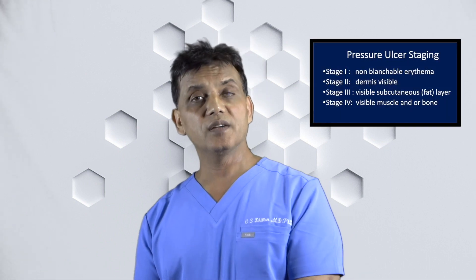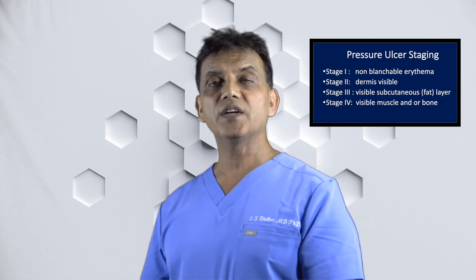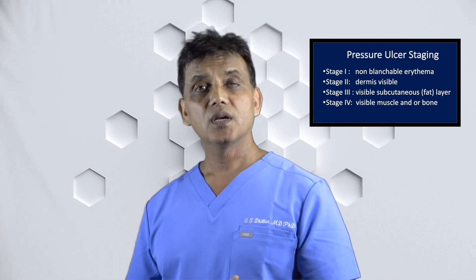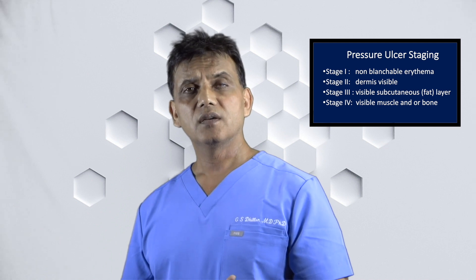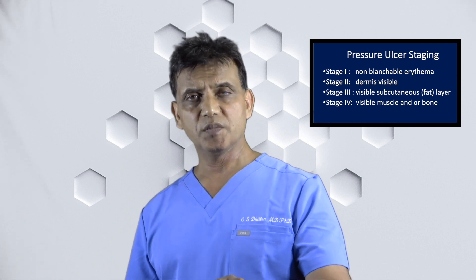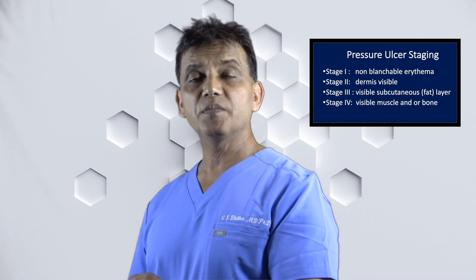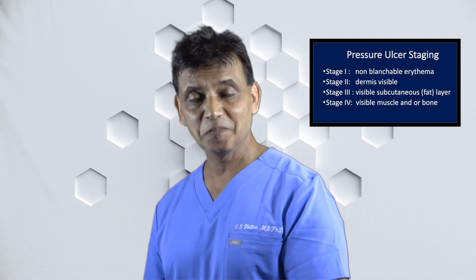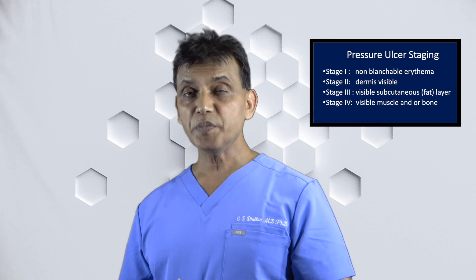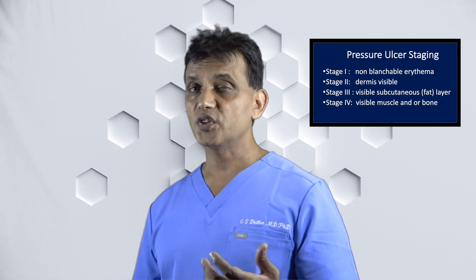Now let's look at pressure ulcer staging. Stage 1 is non-blanchable erythema of the epidermis — visually, when you look at the skin at a stage 1 pressure ulcer, you will see the epidermis, the first layer. Stage 2 is disruption of the epidermis and the dermis and exposure of the second layer, the dermis. Stage 3 is disruption of the epidermis and the dermis and exposure of the third layer, the subcutaneous layer.